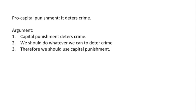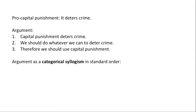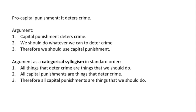We can turn arguments like this into categorical arguments with just a little bit of work. We end up with something like this, which is sort of ugly but at least is a categorical syllogism in standard order: one, all things that deter crime are things that we should do; two, all capital punishments are things that deter crime; and therefore, all capital punishments are things that we should do. This would be AAA-1, which would be valid.